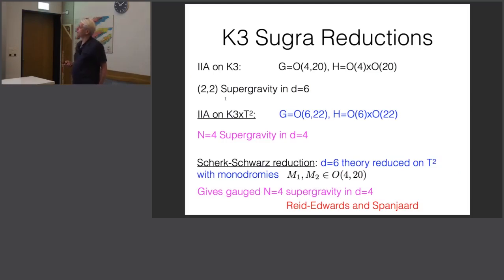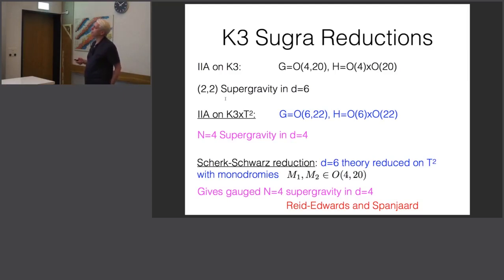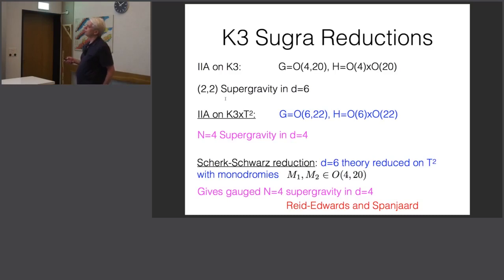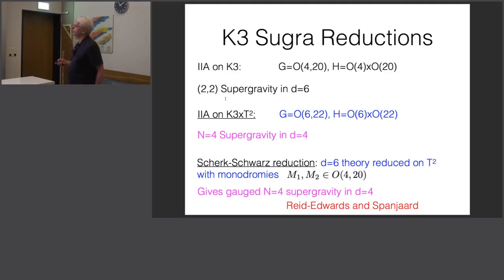We'll be looking at the kind of structure which arises if instead we use K3. A quick reminder: taking type IIA supergravity and compactifying on K3 gives a duality symmetry where the scalars take values in a coset space G/H with G = O(4,20), giving 1,1 supergravity in 6 dimensions. Further reducing on T² gives N=4 supergravity in 4 dimensions with a G/H coset with G = O(6,22), plus an extra SL(2)/U(1) factor involving the axion and dilaton.